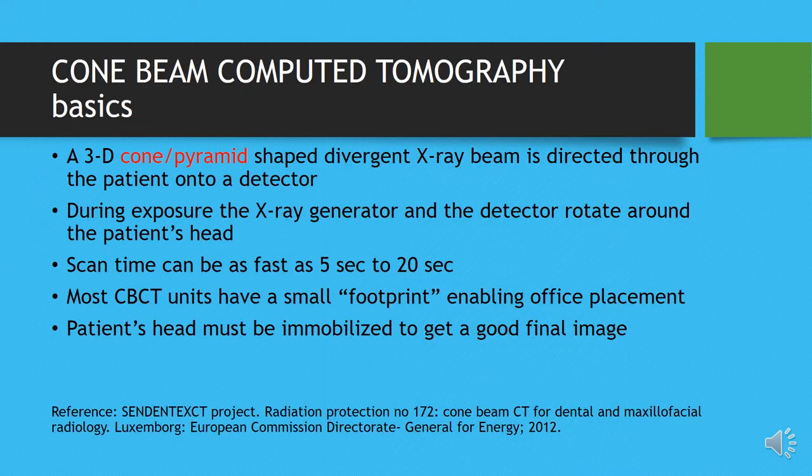Comparing CBCT to conventional CT: in CT, a fan-shaped slit beam is used, and with each rotation you get one slice of image, which is then reconstructed into three planes. In CBCT, instead of a fan-shaped beam, we use a cone-shaped beam directed at the patient onto the detector. Because of this divergent cone beam, multiple slices do not have to be made — it is all taken in a single exposure.